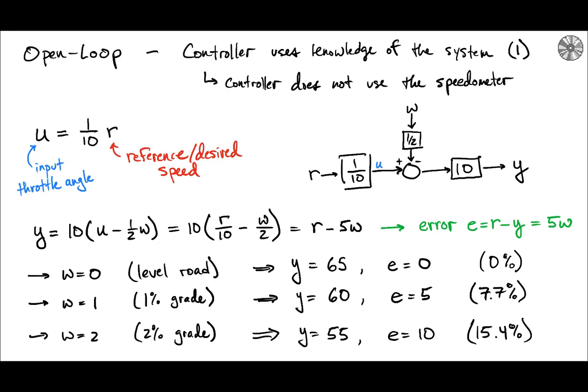However as we start adding road grade we see a deviation. That error increases and so at one percent road grade we multiply five times one and that gives us an error of five, and then at two percent grade the output is now different by 10 miles an hour. And so what we're really seeing is that the open loop approach does not do anything to mitigate the sensitivity of the output to the disturbance w. It just leaves it there and we just hope that the disturbances aren't very large.